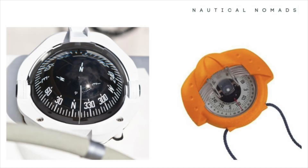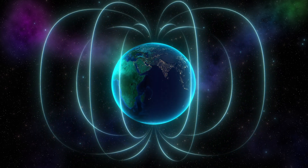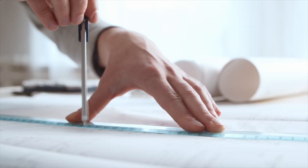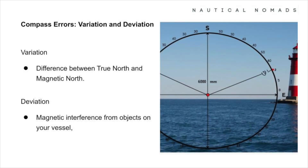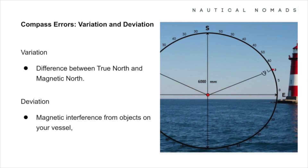Magnetic compasses are prone to two main errors: variation and deviation. Variation is the difference between true north and magnetic north, occurring because the Earth's magnetic field isn't perfectly aligned with its rotational axis. It depends on where you are on the planet and is usually marked on navigation charts. To correct for variation, you add or subtract it from your compass heading to get your true heading. Deviation is caused by magnetic interference from objects on your vessel, like metal structures or electronic devices, and every vessel has its own deviation profile recorded on a deviation card.